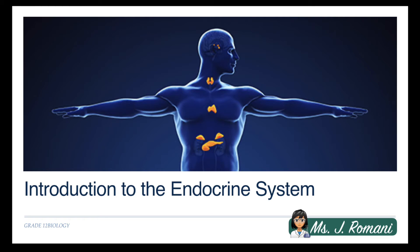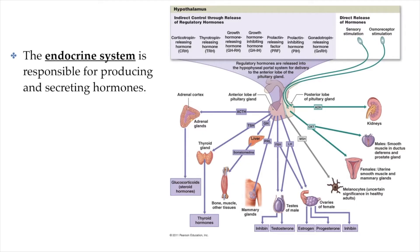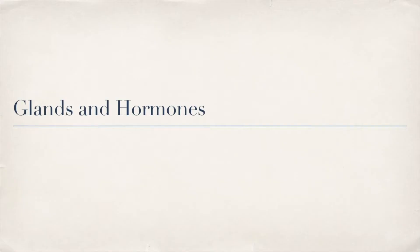Hi guys, this is Ms. Romani and this week we're going to be learning about the endocrine system. The endocrine system is responsible for both the production and secretion of hormones in our body, and there are a lot of hormones actually being produced and secreted by a variety of different glands. Let's learn about the different glands and hormones in general before we get into some specifics.